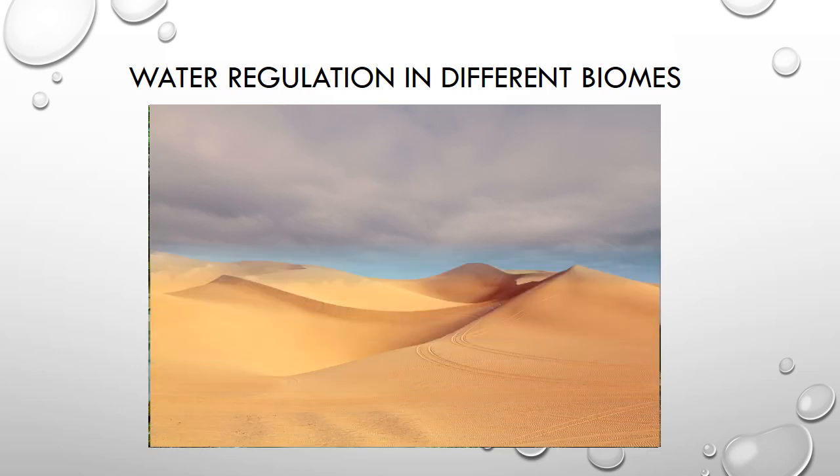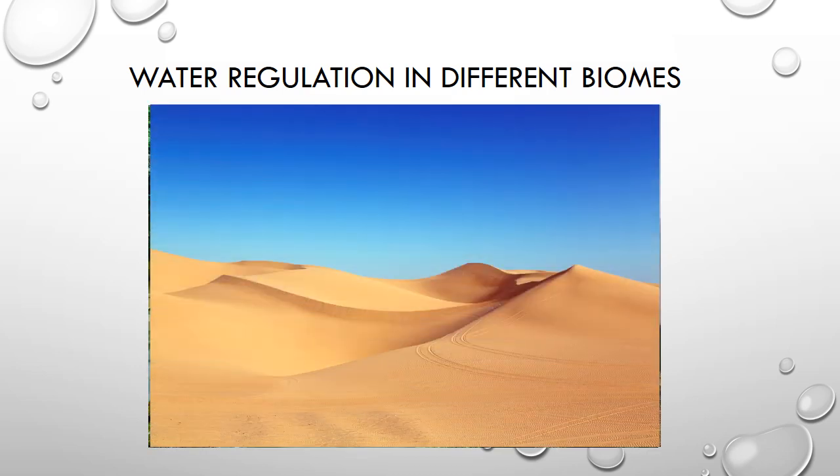Similarly, deserts are also characterized by low precipitation. One way that water retention is regulated in mammals can be seen in the camel, as they have a slow rate of water loss compared to other animals, and are able to withstand dehydration of up to 30%, compared to 10% for all other mammals. Another way that many desert animals avoid evaporative water loss is by burrowing in order to create a cooler habitat.